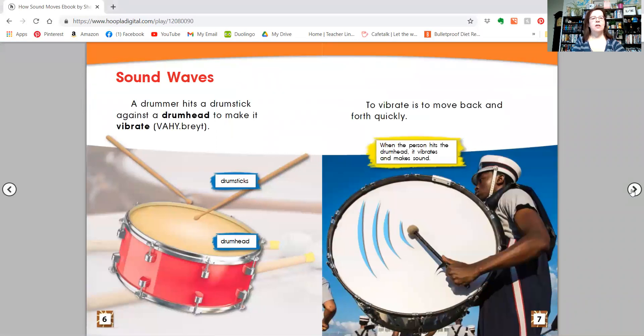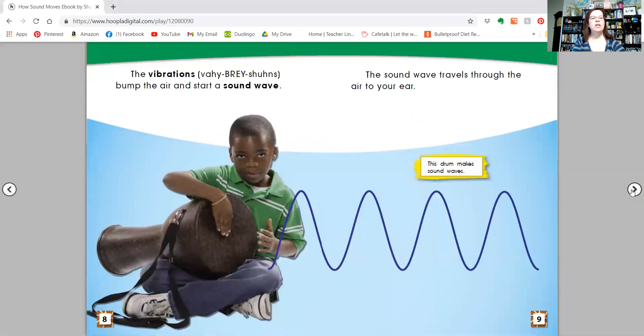Sound waves. A drummer hits a drumstick against a drumhead to make it vibrate. To vibrate is to move back and forth quickly. When the person hits the drumhead, it vibrates and makes a sound. The vibrations bump the air and start a sound wave. The sound wave travels through the air to your ear.